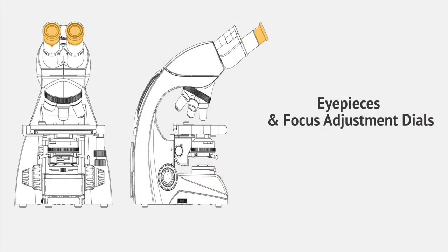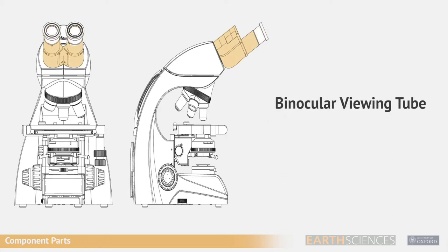The parts of the microscope are as follows: eyepieces and focus adjustment dials, binocular viewing tube, head, revolving nose piece, objectives, carry handle, rotating stage, and quarter wave mica plate.